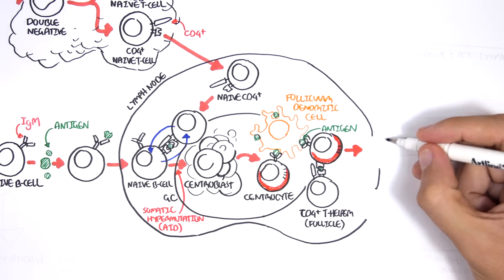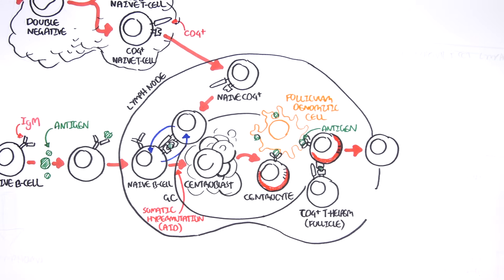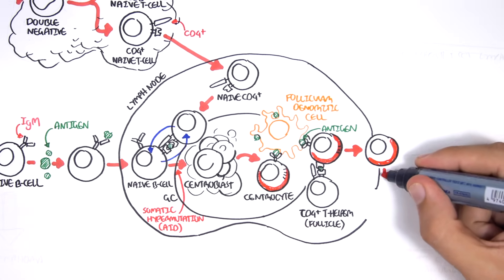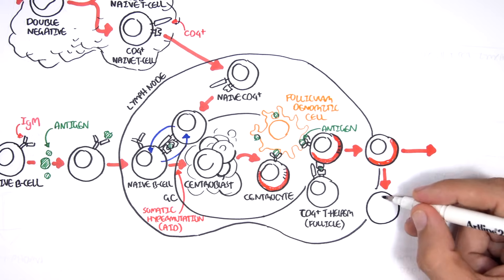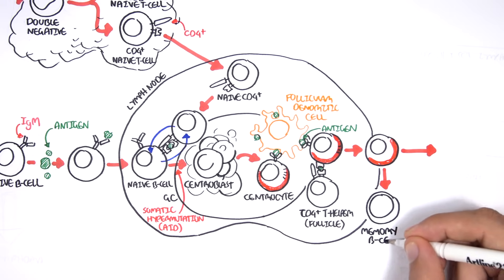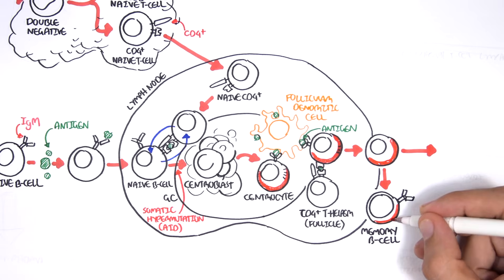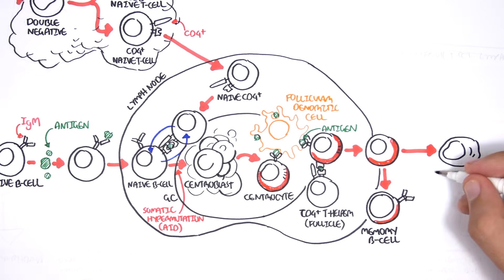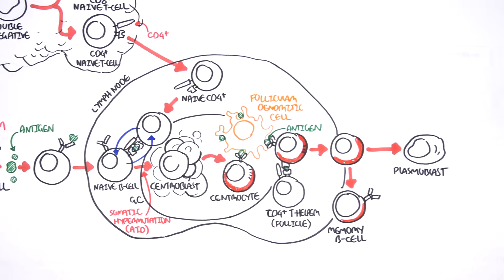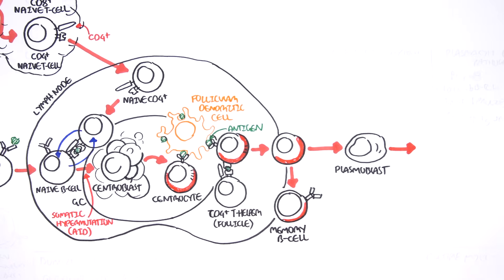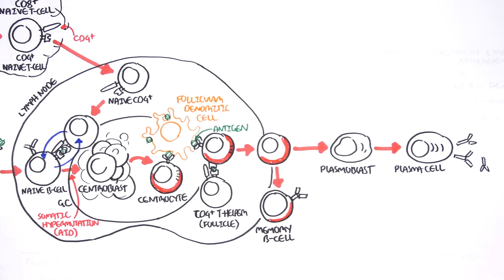The T helper follicular cell will help the centrocyte to proliferate and then to differentiate. The centrocyte can differentiate into a memory B cell or into a plasmoblast, which will then become a plasma cell. Plasma cells are the type of B cells that secrete antibodies.